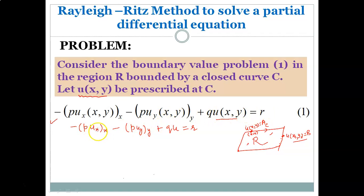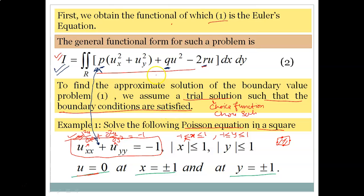In simplified form, the equation can be written as p·u_xx + p·u_yy + q·u = r. The region R is enclosed by the curve C, and the values of the function u are given at certain points on the boundary of this curve. We want to find the approximate solution of this boundary value problem. As in the Ritz method, the first step is to formulate a functional for which this PDE is the Euler–Lagrange equation. A general functional form for this type of problem is given by a specific formula.